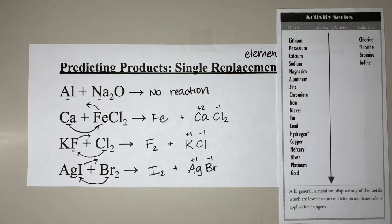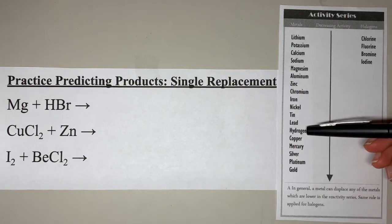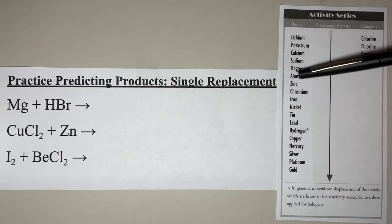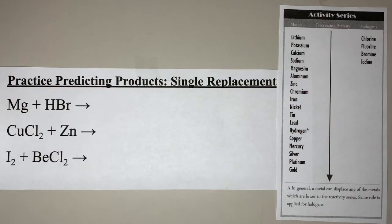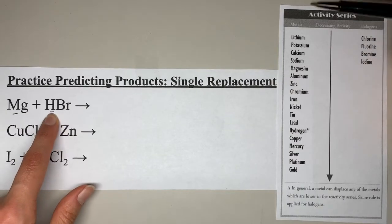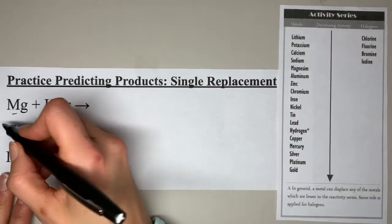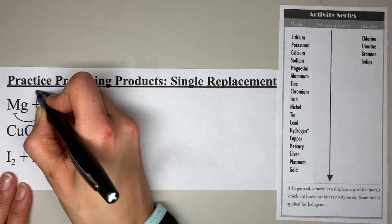That's how you predict products for single replacement reactions. Now let's try some more practice problems — pause the video, try them on your own, then hit play when you're ready. The first one is a little tricky because you see hydrogen, and you might not know whether it acts as a metal or non-metal. Hydrogen is going to act as a metal for single replacement reactions. So in this first problem we do have two metals, and we refer to the metals side of the activity series. Magnesium has to be higher than hydrogen in order to replace it — and it is. So magnesium is going to replace the hydrogen, kicking the hydrogen off.